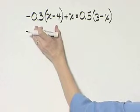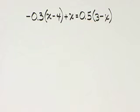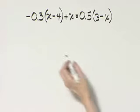I'm going to multiply every single term by 10. Remember, it has to be every single term by the multiplication property of equality.